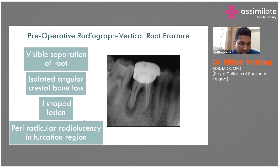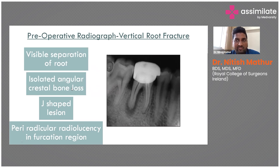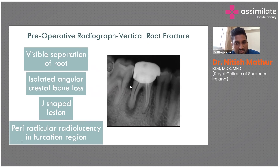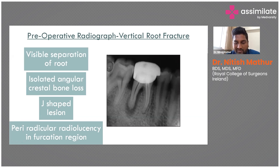Four radiographic points help identify VRF: visible separation of the root; isolated angular crestal bone loss — the chief feature, occurring at the crest; a J-shaped lesion; and peri-radicular radiolucency in the furcation region. All of these are suggestive of VRF.